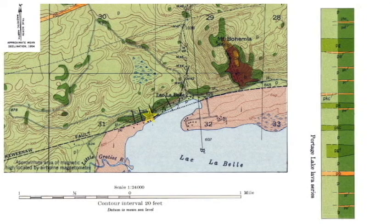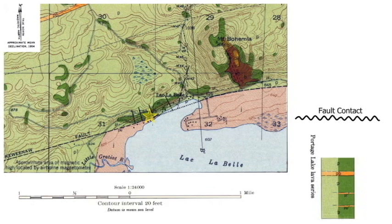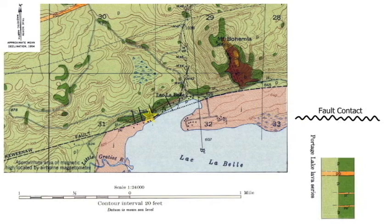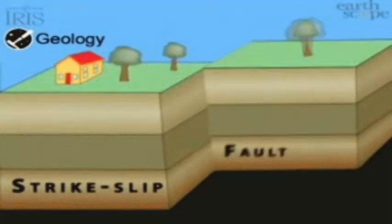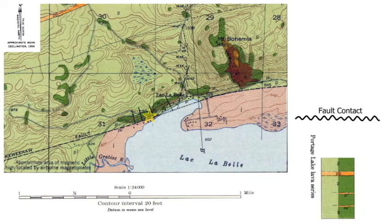You have your Portage Lake Volcanics here, but the whole thing isn't exposed at the section. Why not? Because we have a fault contact. I put the unconformity symbol on here and the word 'fault contact' above it. But remember from my other videos — faults are not unconformities; they're a type of contact. They can cause rock units of different ages to be adjacent to one another, but that isn't always the case. Like with strike-slip faults, there's no vertical movement, so there's no age change. So they're technically not an unconformity.